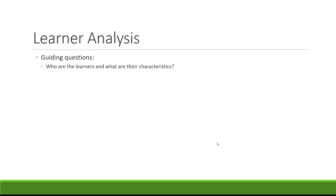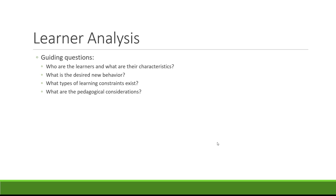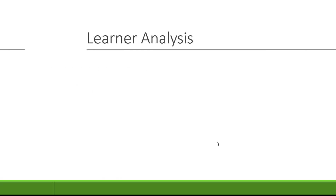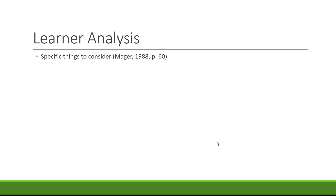Some guiding questions for a learner analysis might be: Who are they? What are their characteristics? What's the desired new behavior, attitude, or outcome? Are there learning constraints for your learners — like computer issues or reading issues? You might also think about pedagogical considerations — how you might teach them and what learning theories might come into consideration. There are lots of lists out there that can guide you on exactly what kind of data to collect and what to consider.